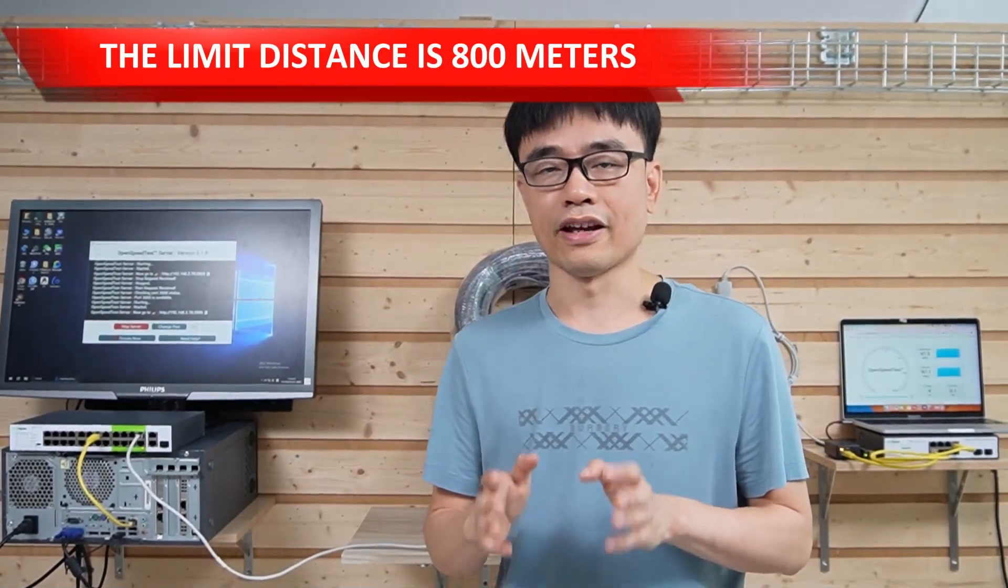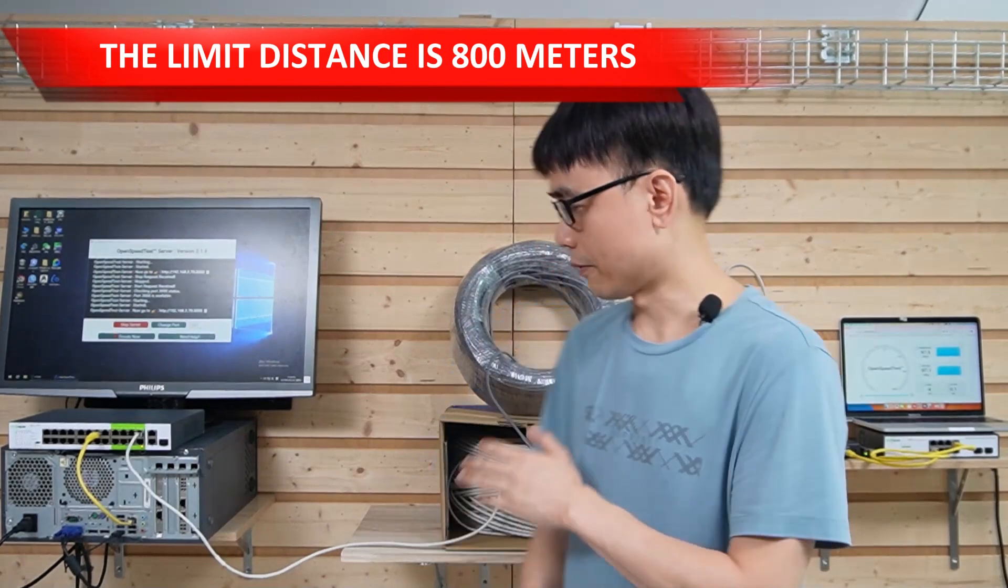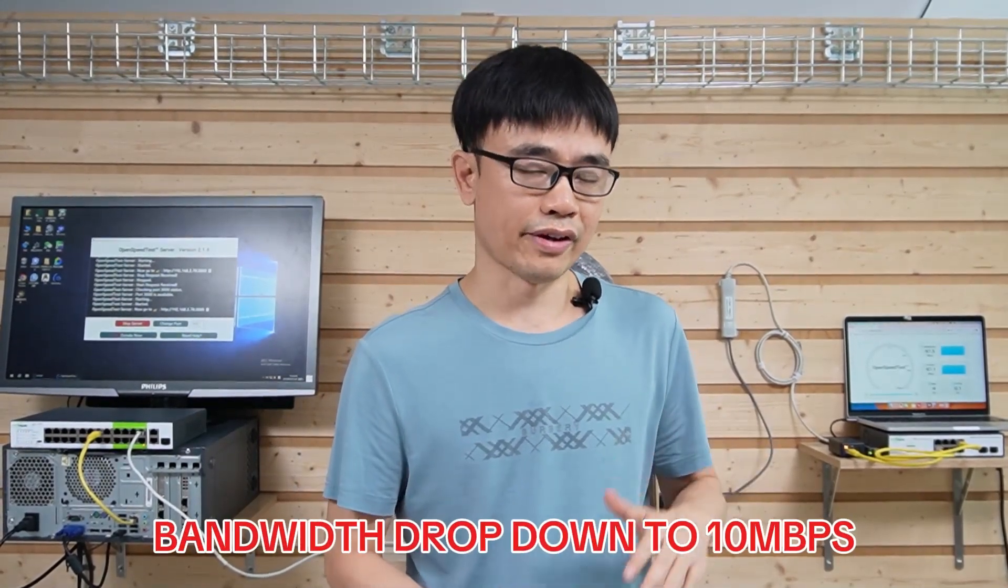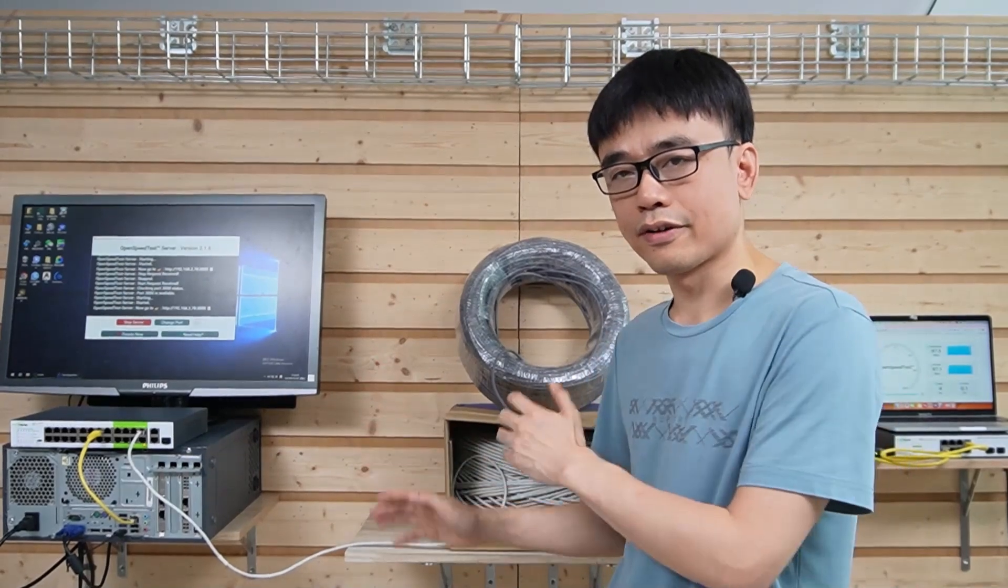I can tell you the limit is 800 meters. But if we just keep increasing the length, the bandwidth will drop down to 10 megabits per second. I know the 10 megabits per second speed is too low, but it's still valuable for some applications such as IP cameras. In other applications such as the IoT device which will consume very low bandwidth, it still works.